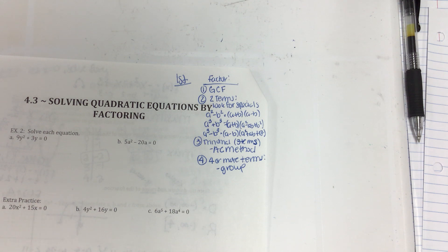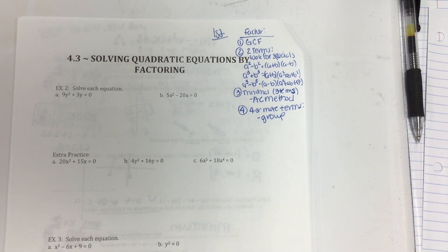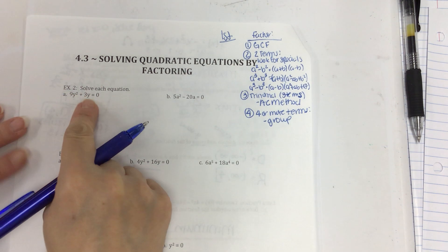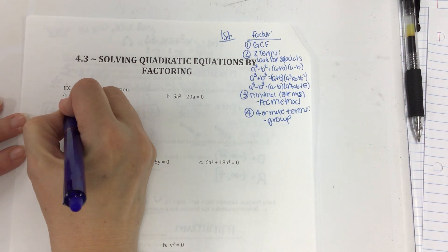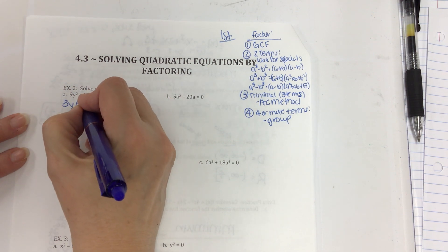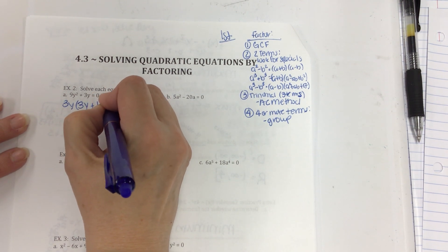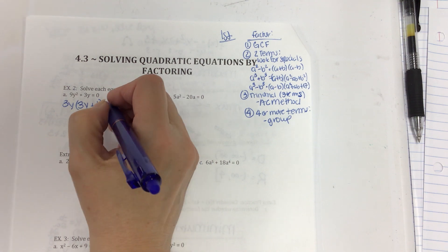Please make sure you write those down. So let's look at this — it says solve each equation. In A, what do we always look for first? Greatest common factor. Do we have one? Yes. What's common in both of those terms? Three and y — we factor those out. Nine divided by three is 3, y² divided by y is y, plus 3y divided by 3y is 1. And it equals zero.